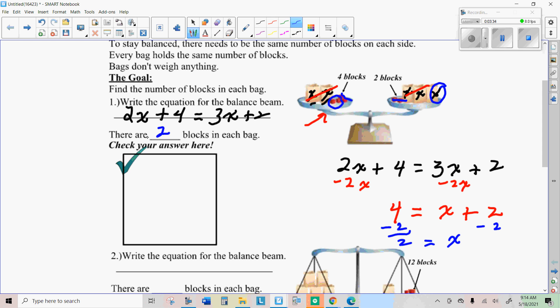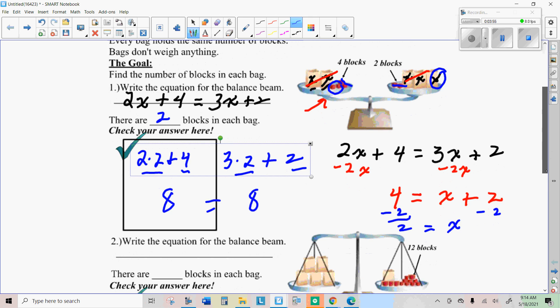So, there are two blocks in each bag. And just to check that, I can just do two times two plus four on one side and then three times two plus two on the other. And just make sure they're both the same. This is four plus four is eight. This is six plus two is eight. So, yeah.